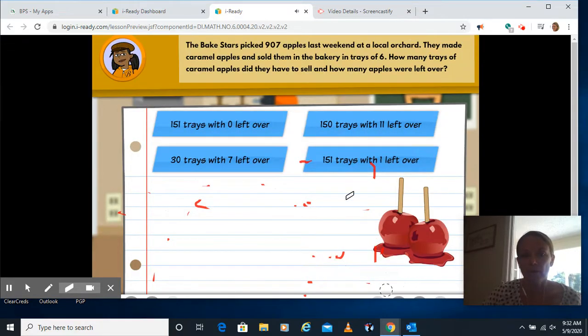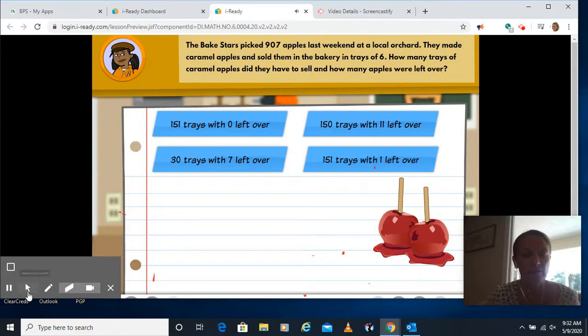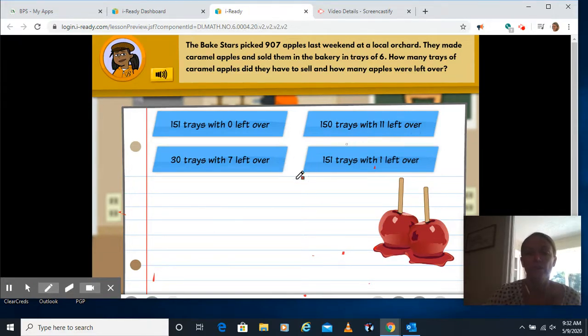The bake stars picked 907 apples last weekend at a local orchard. They made caramel apples and sold them in the bakery in trays of six. How many trays of caramel apples did they have to sell and how many apples were left over? So here you're not finding an estimate anymore. Here we're actually dividing it out.